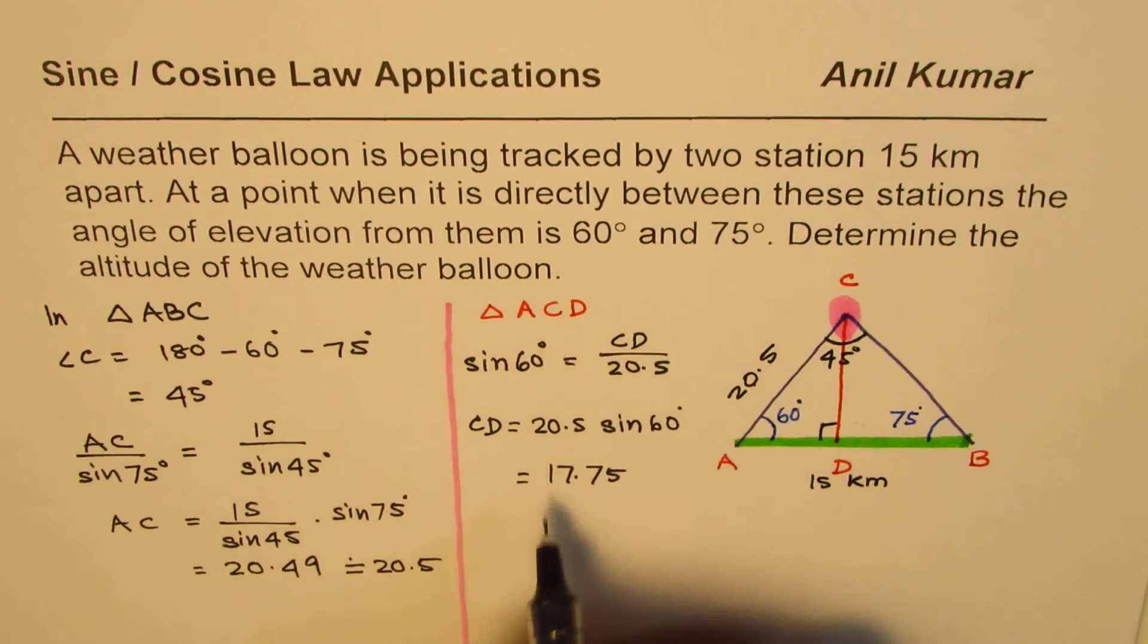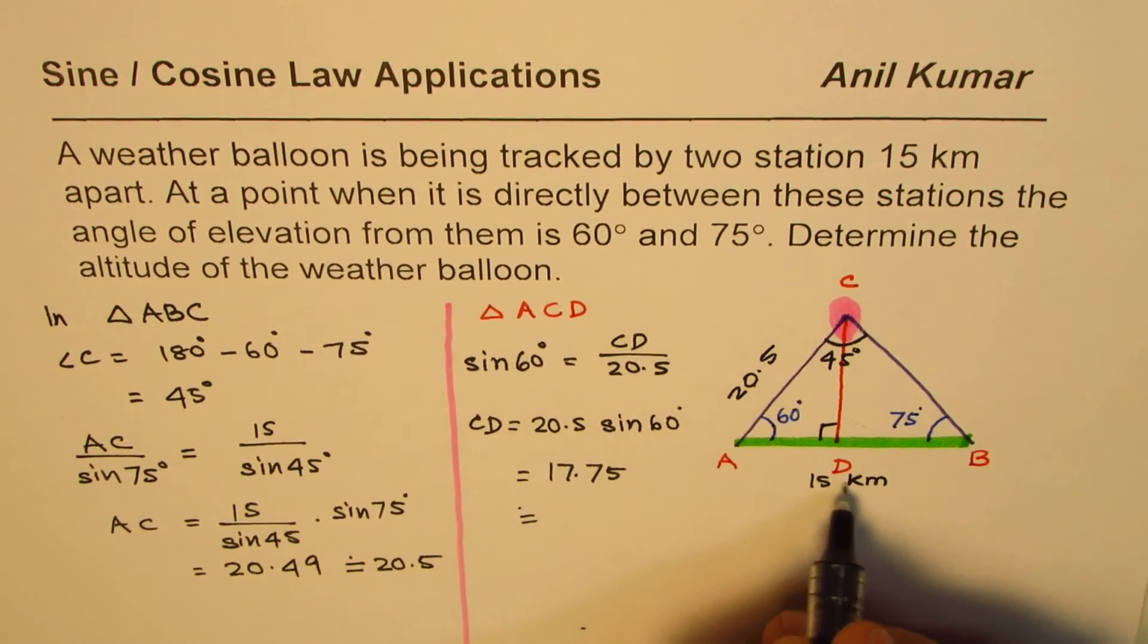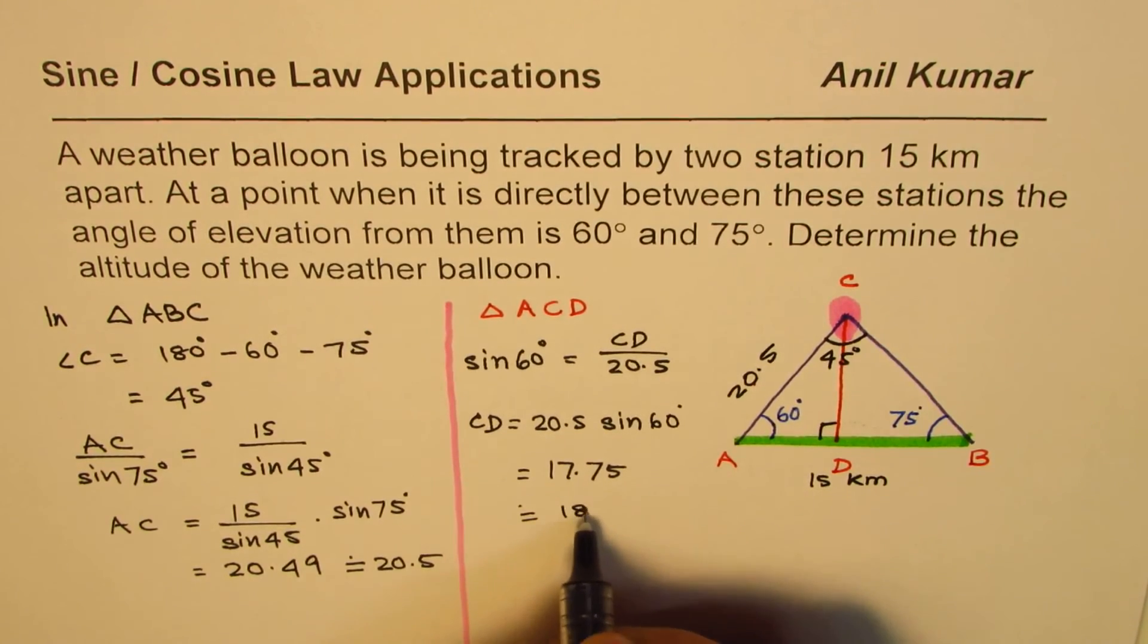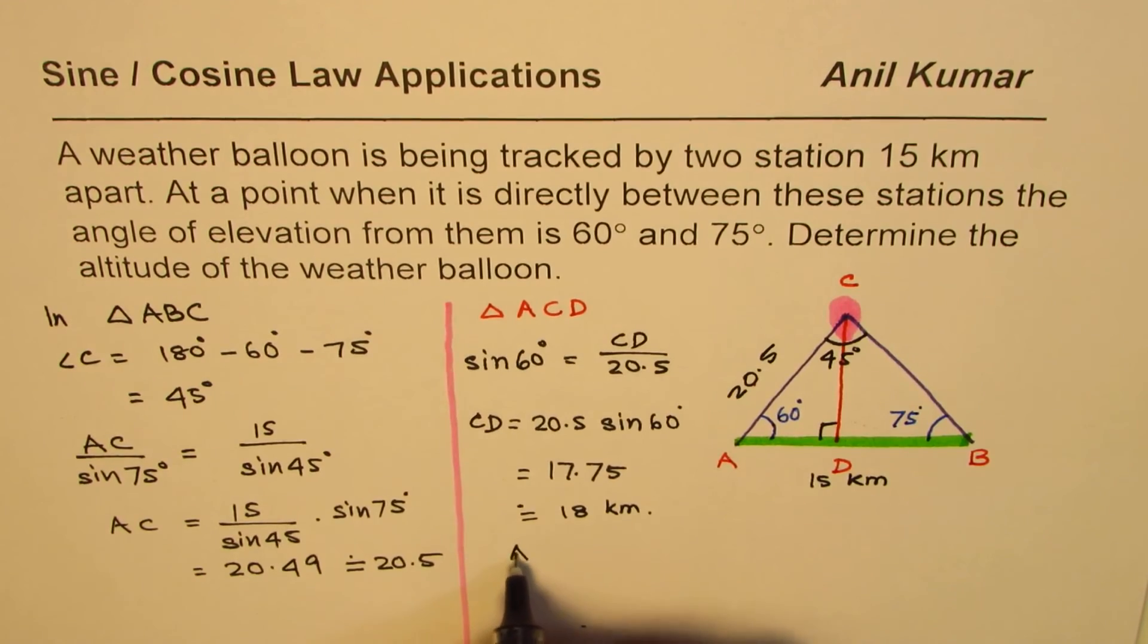So 17.75 could be rounded to - since we are not given how much should we round to, we'll round it to whole numbers since the distance is given as 15 kilometers. So it's approximately 18 kilometers.